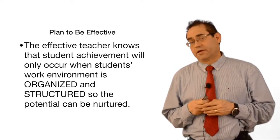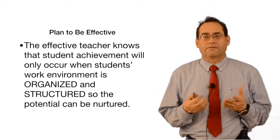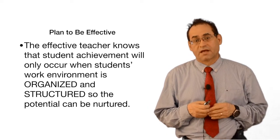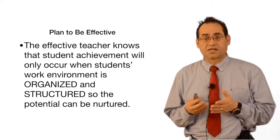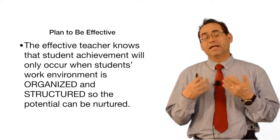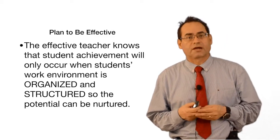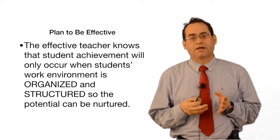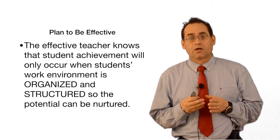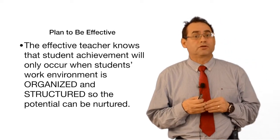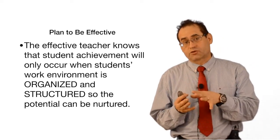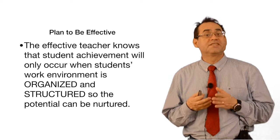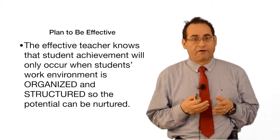Let's plan to be effective. Teachers plan to fail or to succeed from the very beginning of the school year — it all depends on the first day, the first week, the first month, the first year. If you are not managing your classroom, then your students are managing for you. If you don't have anything for your students, they will figure out something to do in your class. The effective teacher knows that student achievement will only occur when a student's work environment is organized and structured so their potential can be nurtured. If they cannot see an organized and structured classroom, they are not going to follow directions carefully. Their self-confidence must be grown and self-discipline instilled. Under the guidance of an effective teacher, learning finally takes place.